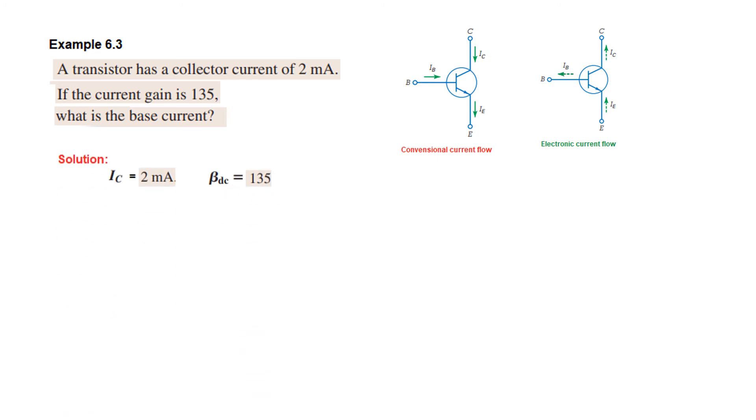So IB equals IC divided by beta DC. And plugging in the value we get the answer of 14.8 microamperes.